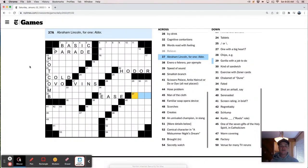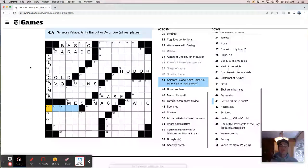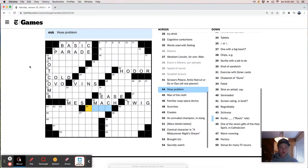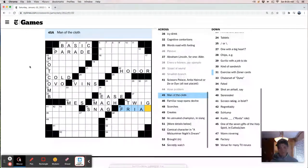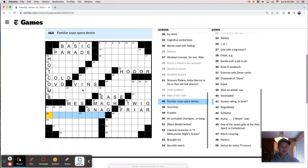That's vague and broad. And the fact that it's abbreviated. I mean, that could be just like a million things. Where he's from or what he did or what bills he's on. Enero o febrero are both meses. Speed of sound is mock. Is that right? Smallish branch is a twig. Scissors palace. Anita haircut or do or die. Those are all salons. But like shops. Hose problems. It's a snag, I bet. Man of the cloth is like a fryer. I mean, it's not priest. It's not minister. I don't know. Familiar soap opera device. Fake death, maybe? Fake death.